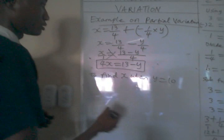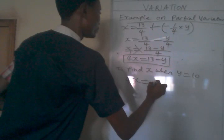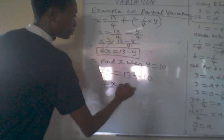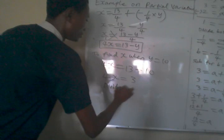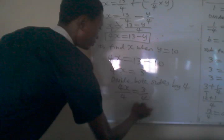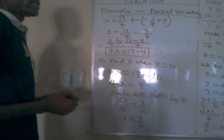To find x when y equals 10, that is 4x equals 13 minus 10. Then 4x equals 13 minus 10 equals 3. Divide both sides by 4. 4x over 4 equals 3 over 4. Then our x equals 3 over 4.